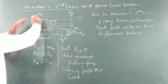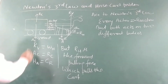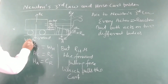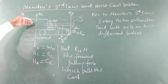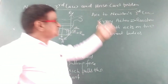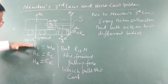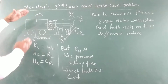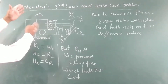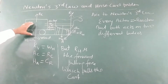The weight of the cart acts in the downward direction — this is the action on the ground. So the reaction will be on the cart, according to Newton's third law. Action acts on the ground and reaction acts on the cart. Since action and reaction are equal, they are balanced.